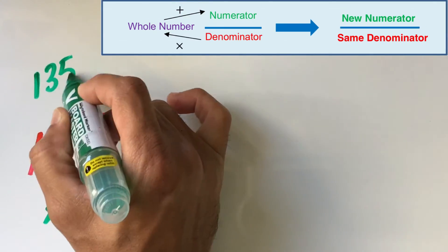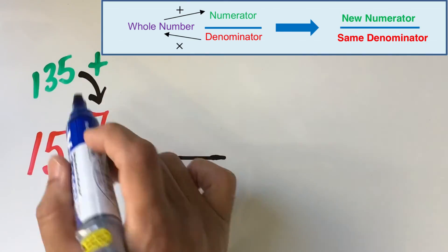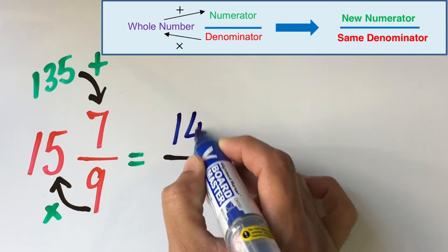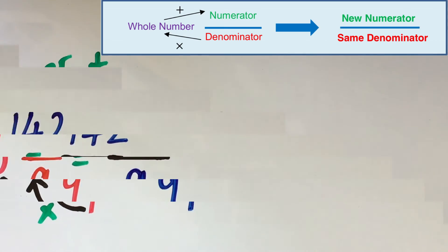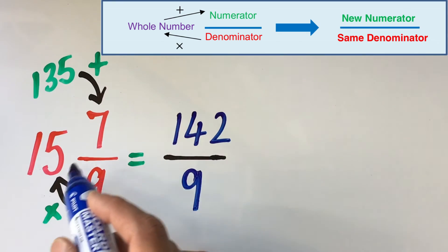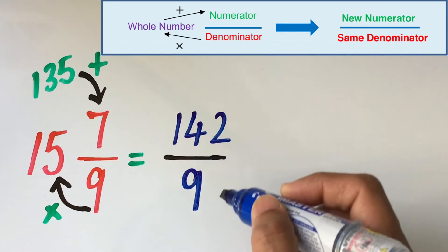And then we add the result to the numerator. 135 added with 7 gives us 142 and we keep the denominator the same. So the mixed fraction 15 whole 7 over 9 is same as the improper fraction 142 over 9.